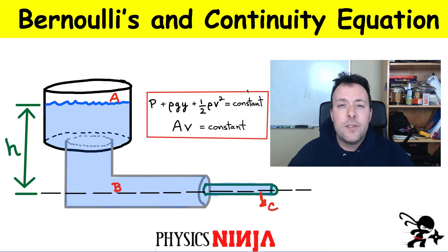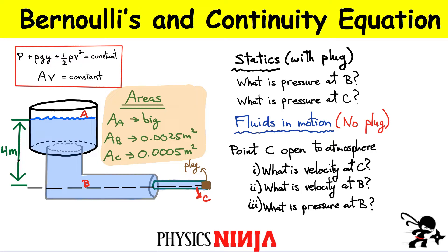Let's get started. The height of the water level relative to the centerline of both pipes is approximately four meters. The cross-sectional areas are: the reservoir is very large so I'll just call it big, section B is 0.0025 meters squared, and section C is smaller. If a problem gives you radii instead, you can calculate area using pi R squared. Here I've given you the actual areas.